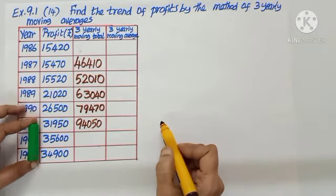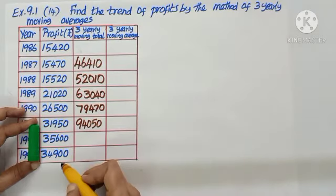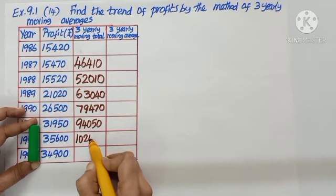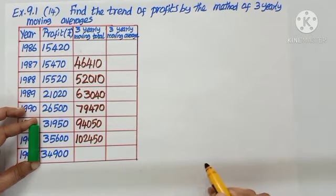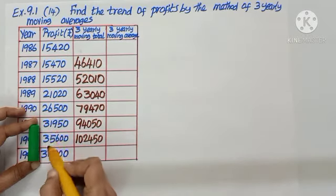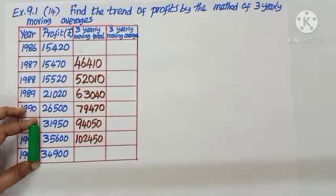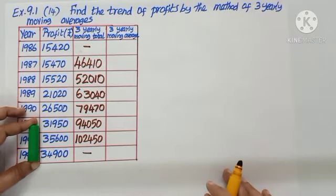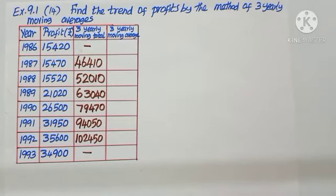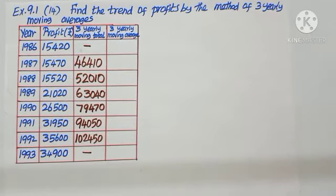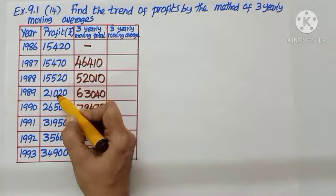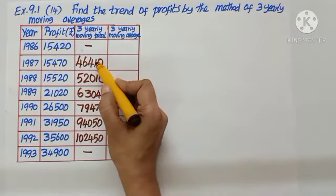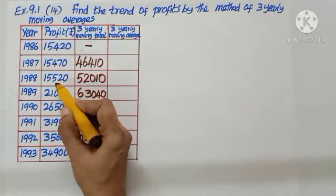Again these three we are going to add, so each time I leave one value, I keep moving, and that's why the name moving average. Add all the three, see what you get: 94,050. Again move. Now what is the total? It is 102,450. Now once I complete the last three I cannot proceed further, so first and last we cannot calculate. Now we have completed the moving total. What is the question? Moving average. How many we added each time? Three values we added.